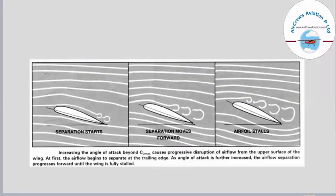The pictures show different angles of attack through an envelope of air. The first picture shows a small angle of attack, the second shows an increased angle, and the third shows a very high angle of attack. Increasing the angle of attack beyond CL max causes progressive disruption of airflow from the upper surface of the wing. At first, airflow begins to separate at the trailing edge, with vortices forming there. If the angle of attack is increased further, the airflow separation progresses forward until the wing is fully stalled, as clearly shown in the third picture.